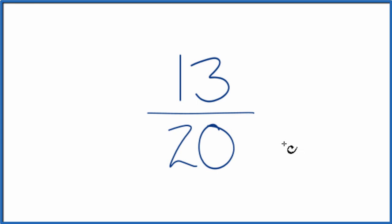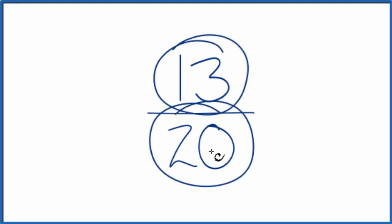To do that, we need to find a common factor, something that goes into 13 and 20 evenly. But the only number that goes into 13 and 20 evenly is 1.